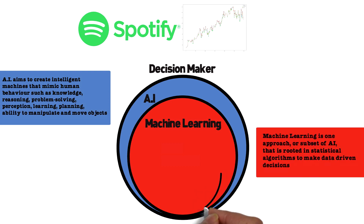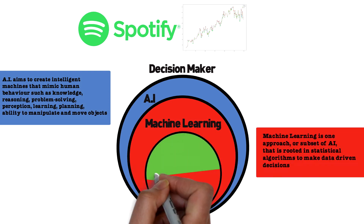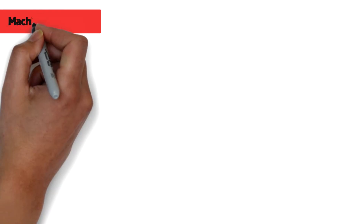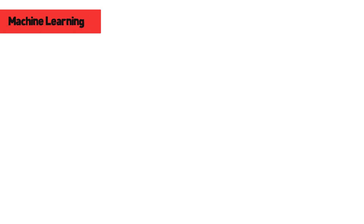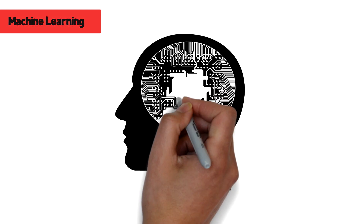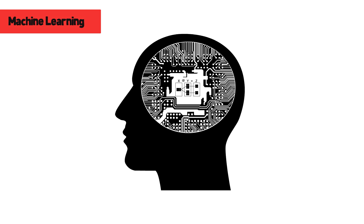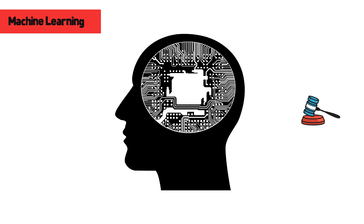Deep learning is a further subset of machine learning, and it uses neural networks to reason in determining whether or not machine learning output was correct and adjust if necessary. At its core, machine learning are algorithms that parse data. They learn from data and then apply what they've learned to make informed decisions. More specifically, algorithms take data along with training that it has received to provide an output or a decision. Over time, the training process improves the overall quality of each output.